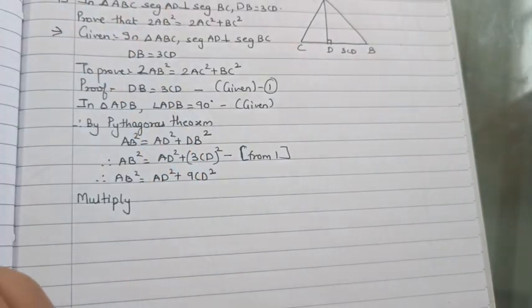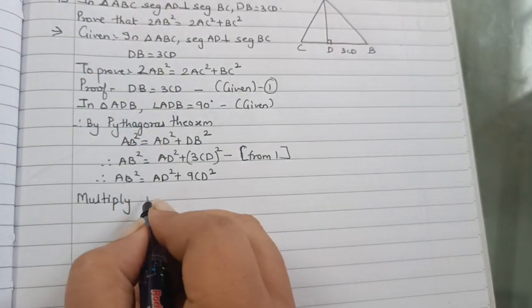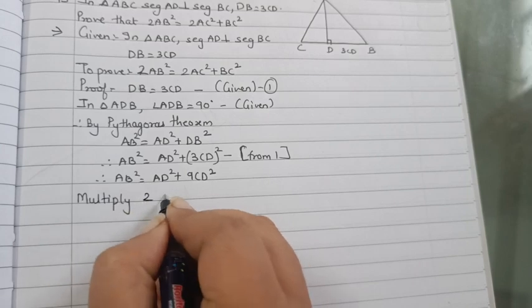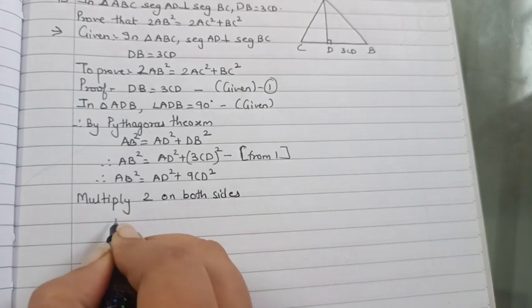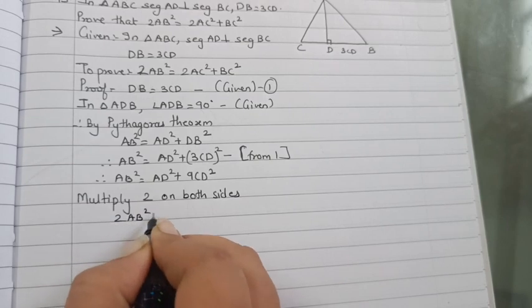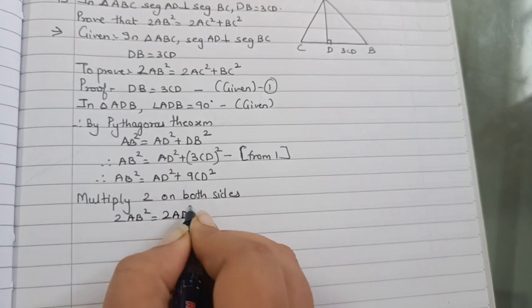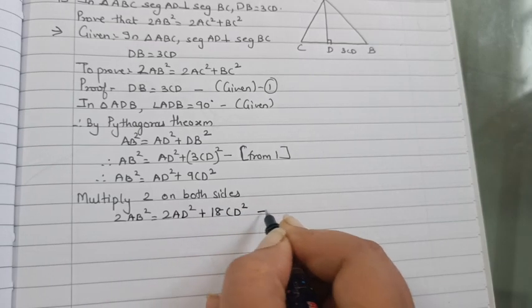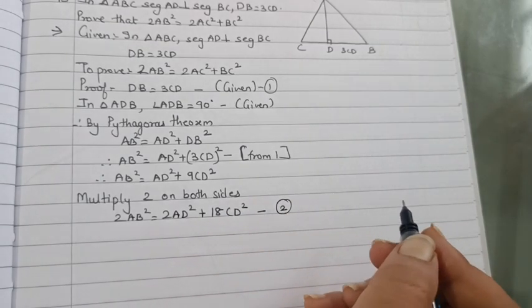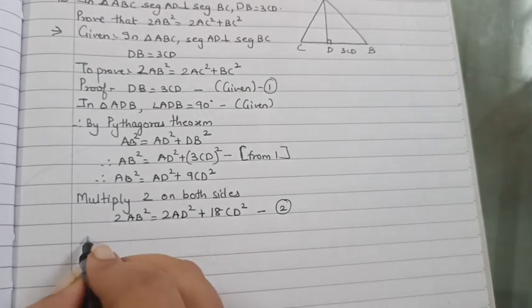From equation 1, therefore AB² equal AD² plus 9CD². Now what you will do, you will multiply 2 on both sides because we have to make 2AB².